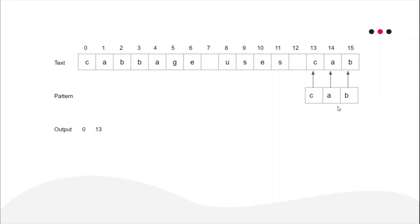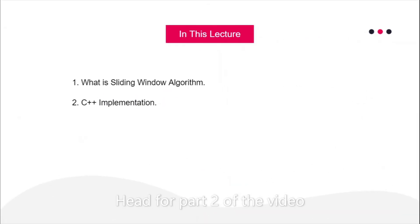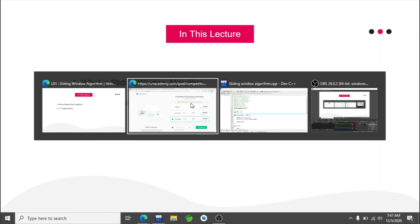Finally, you stop because there is no more space for the window to move right. So the output printed is 0 and 13. This is how the sliding window algorithm works: you start from the very beginning, keep moving your window towards the right, and each time compare the current visible text with the pattern. If it matches, print the index of the first character of the visible text; otherwise, just move the window to the right. Now it's time for the C++ implementation of the algorithm.